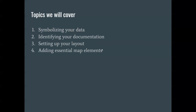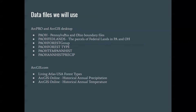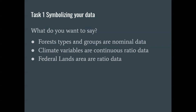Remember from the introductory video that the first thing we're going to look at is symbolizing your data. This is the set of data that we have. We have a Pennsylvania and Ohio shapefile feature class that is the boundaries of the states. Then we have the federal lands within this. And within these, we're interested in two different ways of thinking about this space — we have raster datasets that are the forest group and type, and then we have some climate variables: temperature and precipitation.